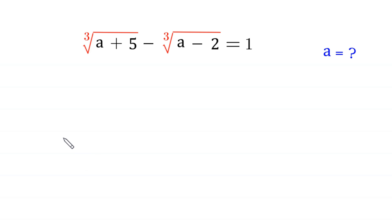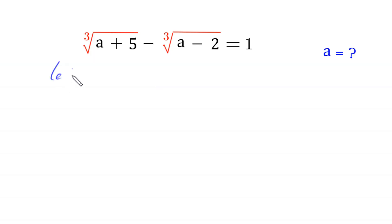Hello everyone, welcome. We will solve this algebra equation: the cube root of (a+5) minus the cube root of (a-2) is equal to 1. Our job is to find all possible values of a. Let's start. We suppose that x is equal to the cube root of